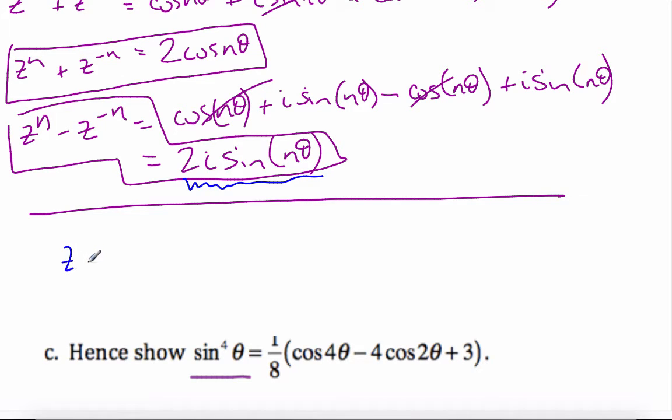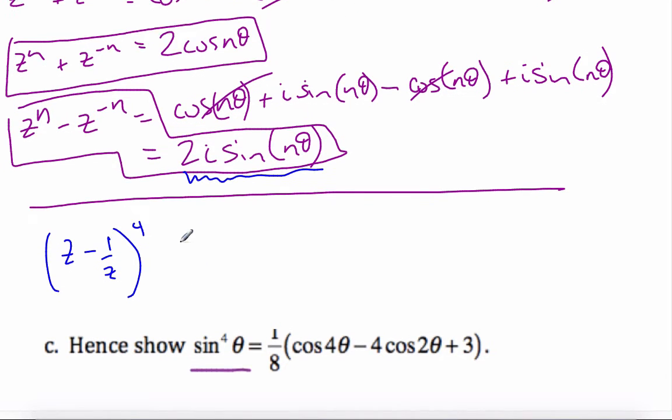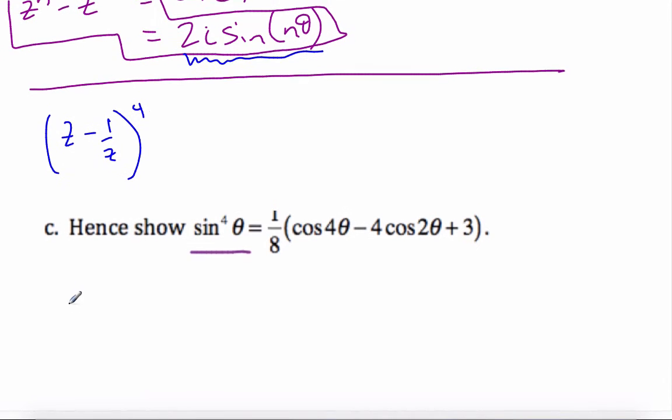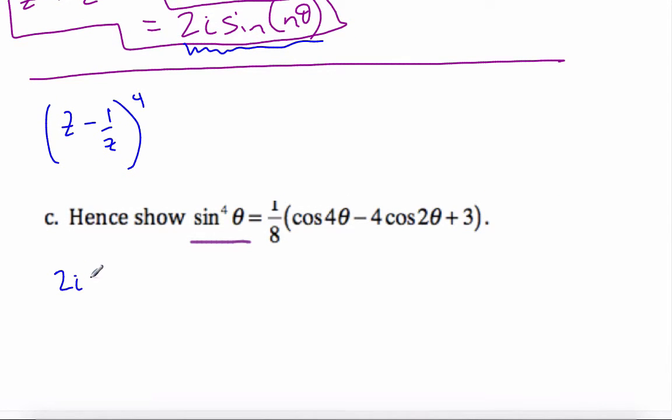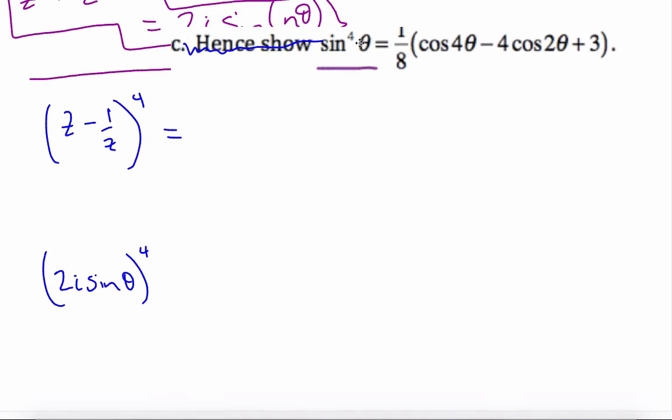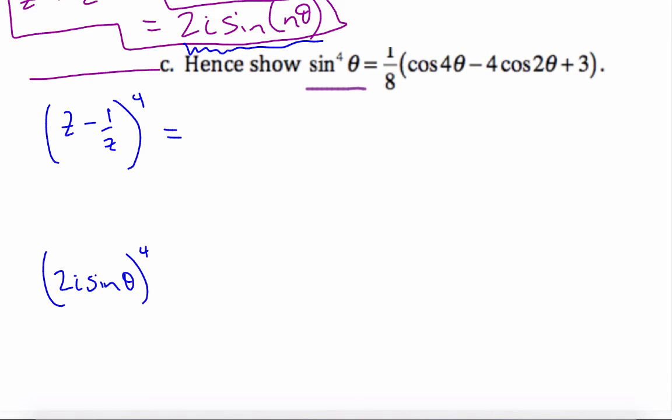So let's start off by saying that z minus 1 over z to the power of 4. So this computation here is simply saying 2i sine theta, because n is 1, to the power of 4. But this here also says, let's move this out of the way for now. Now, this also says, using binomial theorem,